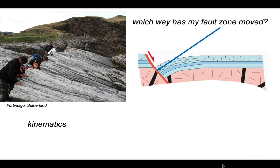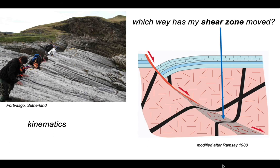One of the critical things we want to resolve in structural geology is the direction in which things have displaced and moved. This is captured by the concept of kinematics. We're familiar with this because of considerations of fault zones, where we can answer which way the fault has moved by looking at the offset of markers between hanging wall and footwall. Now we're going to take these ideas into deeper environments where shear zones represent zones of relative displacement, and the question we want to ask is: which way has my shear zone moved?